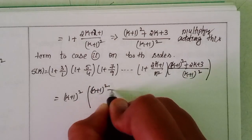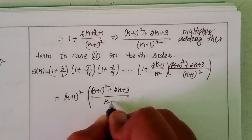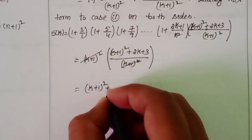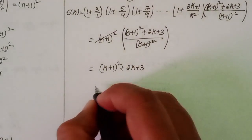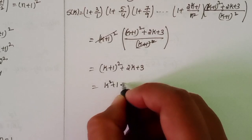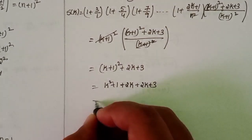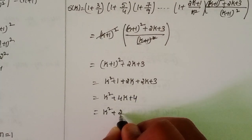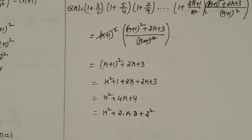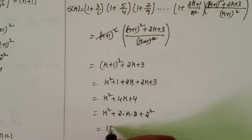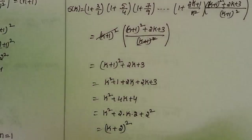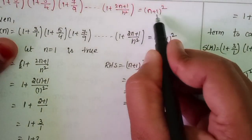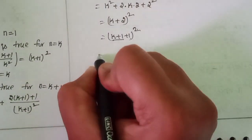Cancel (k+1)² on both sides. We get (k+1)² + (2k+3). Expanding: k² + 4k + 4 = (k+2)², which can be written as (k+1+1)² = (k+2)². Therefore S(n) is true for n = k+1.